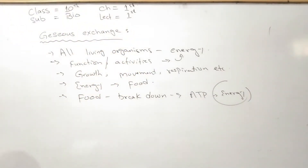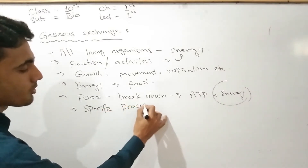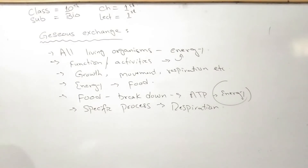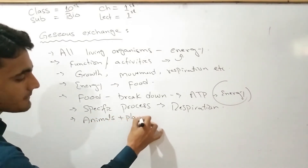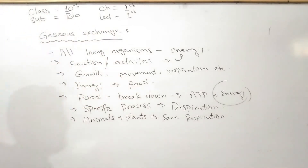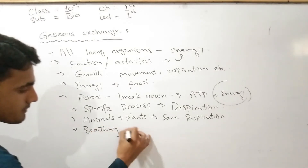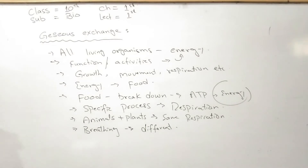For the deep breakdown of food, a specific process is necessary — that process is respiration. Respiration is necessary for both animals and plants. Similarly, except for the breathing mechanism, the breathing system is a different thing. For example, for plants and animals, specialized organs are used.